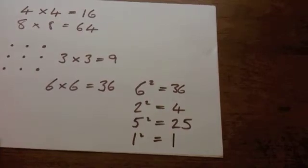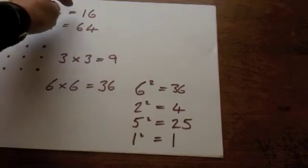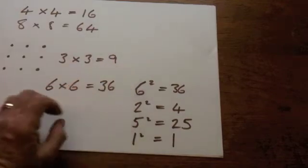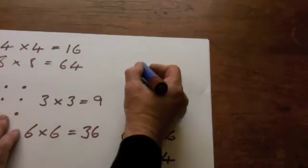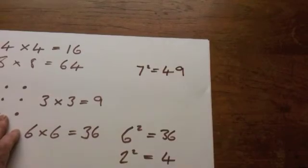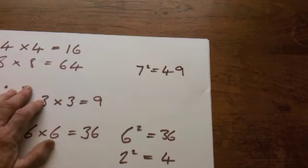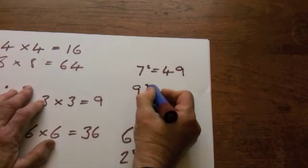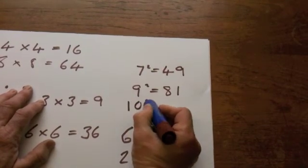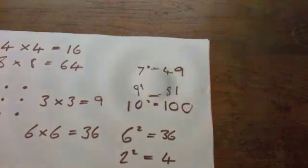So let's look again. 1 squared is 1. 2 squared is 4. 3 squared is 9. 4 squared is 16. 5 squared is 25. 6 squared is 36. How about 7 squared? The square of 7 is 49. 7 squared is 49. 8 squared is 64. 9 squared is 81. And 10 squared is 100. 10 times 10, 100.